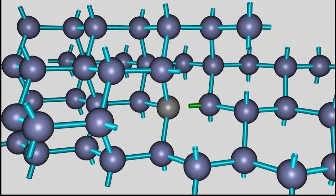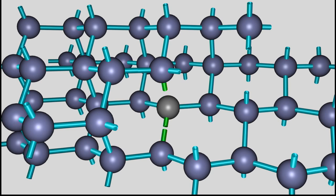The energy level of the covalent bonds between the impurity atom and each of the close-by silicon atoms is identical. No energy is needed to push the hole around the impurity atom, hence it doesn't matter where the hole is located.